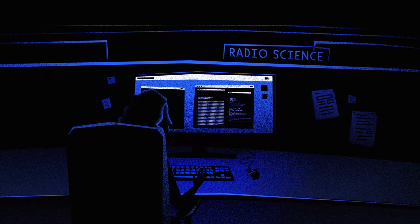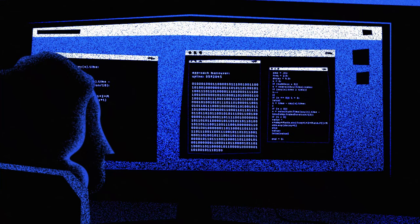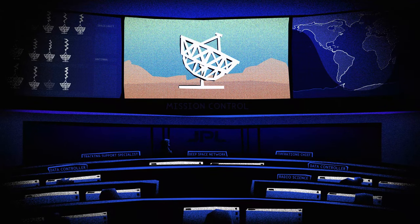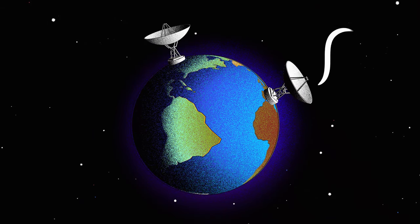Operators at the Deep Space Network take commands, break them into digital bits, precisely aim these big antennas at the spacecraft, and send those commands to the spacecraft using radio waves.